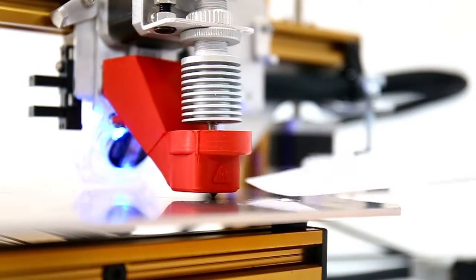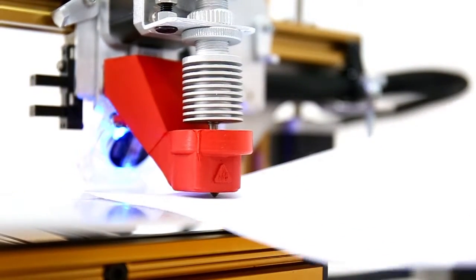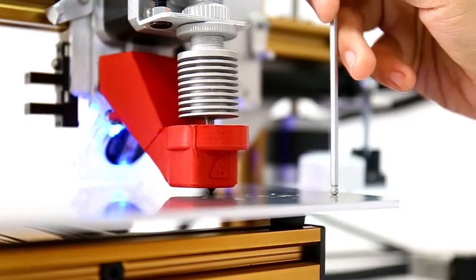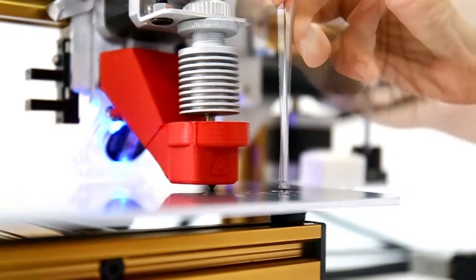If the distance is too wide, this means that the gap is more than 100 microns, which is not ideal for the filament to stick on the plate. You must then rotate the screw counter-clockwise to lift the plate.